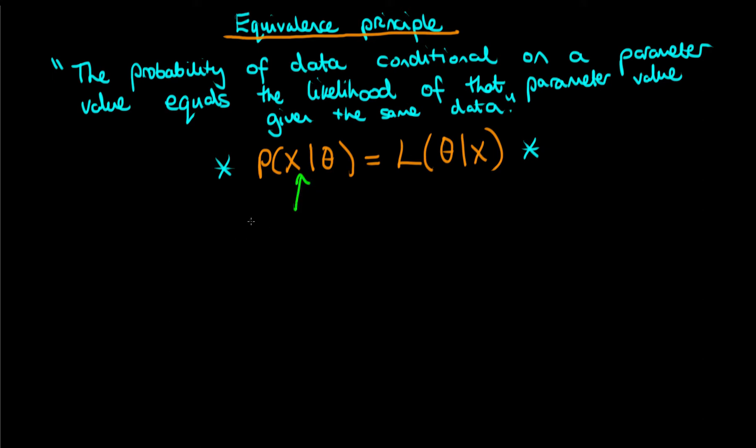When we vary the data x and we hold theta constant, then the object that we have behaves as a proper probability distribution and hence we call it a probability distribution.